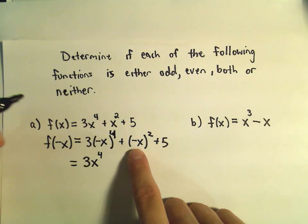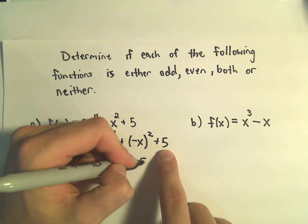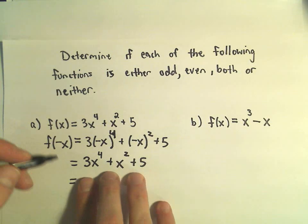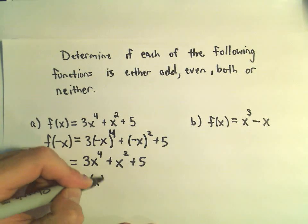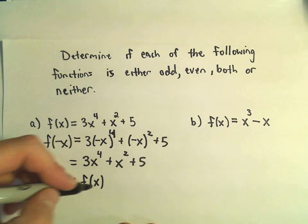Likewise, negative x times negative x is positive x squared. Positive 5 is still just hanging out there. So notice we've plugged in negative x. We got back the very original function we started with. So it says f of negative x does equal f of x.